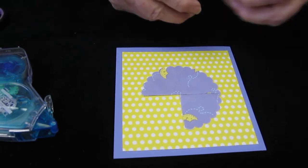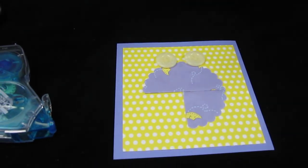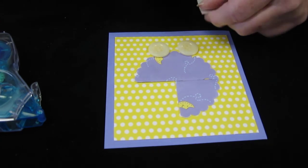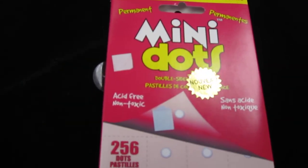And for the wheels we are going to use buttons. And what we are going to use to attach them are little dots, double-sided sticky dots.